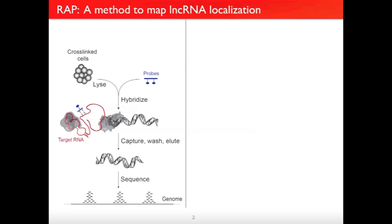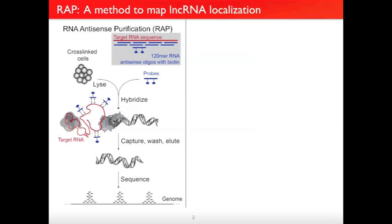On paper it sounds very simple — Eric told me this was a two-month rotation project. But in reality it was very challenging; it took a few years to get right. We named this protocol RNA Antisense Purification (RAP). The probes were the critical piece: if you choose any particular location on the lncRNA, it might be blocked by a protein binding site or secondary structure. So instead, we tile probes across the entire sequence to capture any accessible part of the lncRNA. We also made the probes very long — 120 nucleotides — to ensure very specific capture of our target lncRNA.